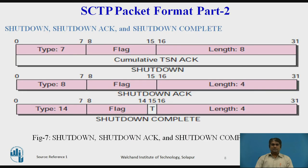Shutdown, Shutdown ACK, and Shutdown Complete: These three chunks are similar. The shutdown chunk (type 7) is 8 bytes in length; the second 4 bytes define the cumulative TSN. The shutdown ACK chunk (type 8) is 4 bytes in length. The shutdown complete chunk (type 14) is also 4 bytes long and has a 1-bit T flag, which shows that the sender does not have a TCB table. The figure shows the format.